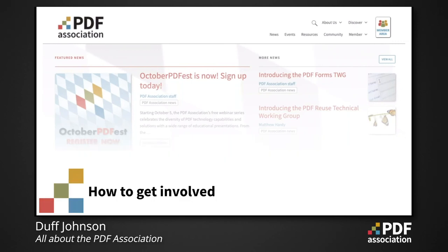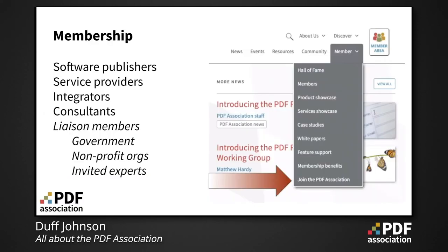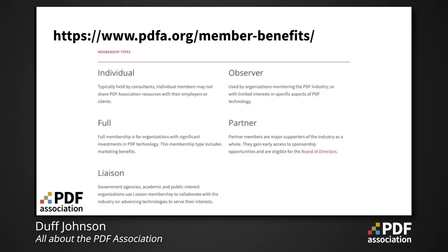How do you get involved? Membership in the PDF Association is open to a wide variety of organizations and individuals. At present there are over 116 PDF Association member companies from over 22 countries around the world. To begin the process of joining, all you have to do is fill out the form. Membership dues are assessed annually. The PDF Association is a small nonprofit with a very small staff. Visit the membership benefits page to review the various types of membership — fees are based on worldwide company headcount, with no limit to the number of employees that may access members-only resources on pdfa.org.